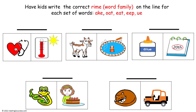Now have kids write the correct rhyme on the line for each set of words. The choices are AKE, OAT, EAT, EEP, and OO. This is the completed example: EAT for beat and heat, OAT for goat and float, OO for glue and do, AKE for snake and cake, and EEP for sleep and jeep.